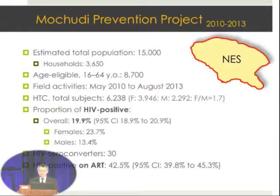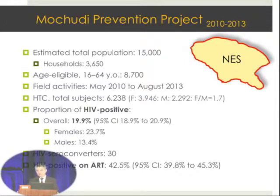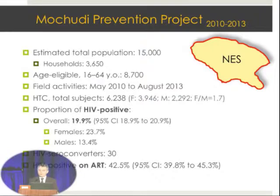The proportion of HIV positive among those tested was almost 20%, with prevalence of 23.7% in females and 13.4% in males. During this time, we identified 30 seroconverters—persons tested negative and then seroconverting in a subsequent annual survey. The proportion of people on antiretroviral therapy among those tested was 42.5%. We did genotyping on everybody who was HIV positive where we could get a sample—primarily in households using dry blood spots. Those not on ART were invited to clinic for venous blood draw to collect plasma and buffy coats.